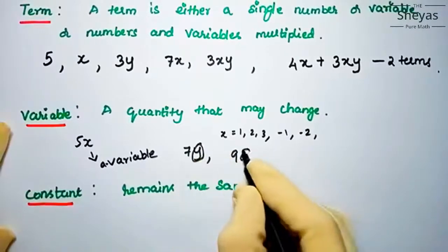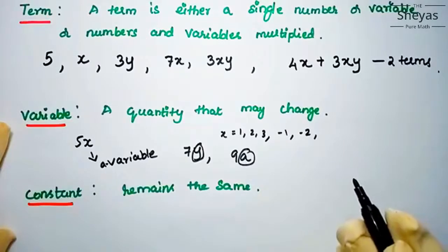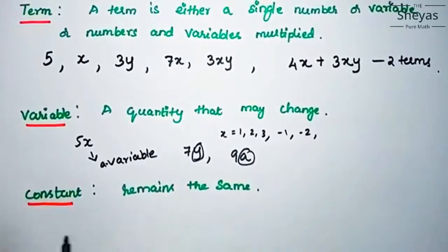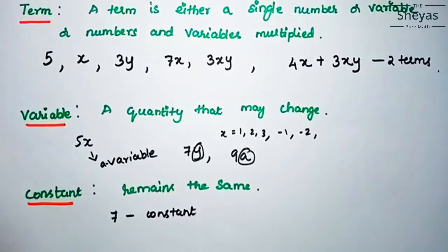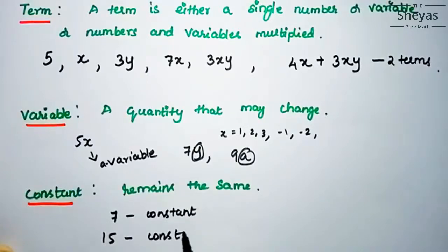The next concept is constant. A constant remains the same. For example, 7 is a constant — we are not going to change the value of 7; it remains the same. Then 15 is again a constant. All numbers are constants because their values remain the same and we do not change them.